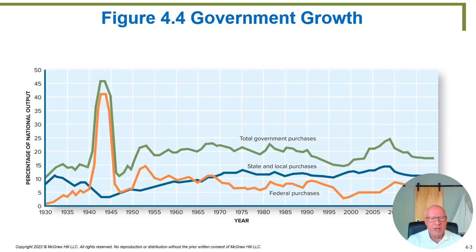In this particular graph we can see a chart of the different levels of government spending. We break down the total government into federal government and state and local government separately. The orange line is federal government spending, the blue line is state and local government spending, and the green line is the total — the two added together.